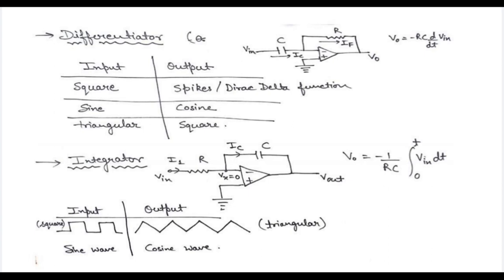The first important thing is the differentiator circuit and the integrator circuit. We should be able to identify whether a given circuit is a differentiator or an integrator. In both circuits, the input is provided to the inverting terminal — the negative terminal. The feedback is also provided towards the negative terminal in both circuits.